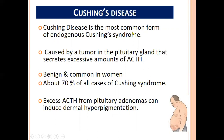Cushing disease is the most common form of endogenous Cushing syndrome. A tumor grows within the pituitary gland and produces excessive amounts of ACTH. This travels via blood to the adrenal glands located above the kidneys, causing them to release excessive cortisol. High cortisol builds up over time to cause the signs and symptoms of Cushing syndrome, which may be physical, emotional, and cognitive.